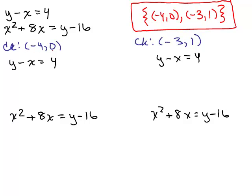So first we'll check negative 4, 0, so we're going to put in, for Y we'll replace that with a 0, and we'll replace X with negative 4. And so if I simplify this side, I'm just going to get 4, and on the right side I got 4, so that one checks.